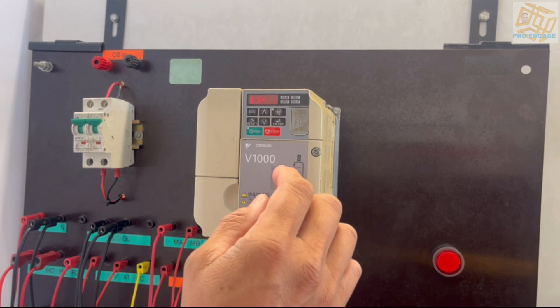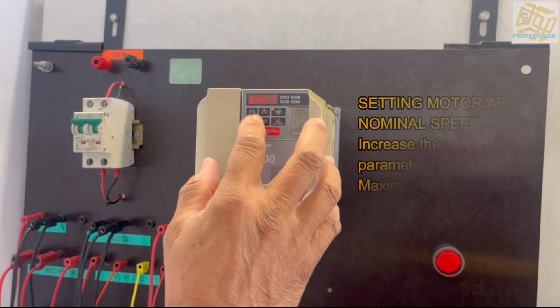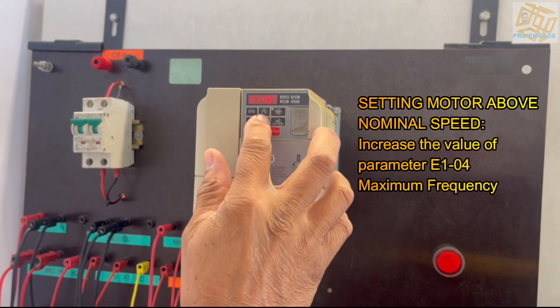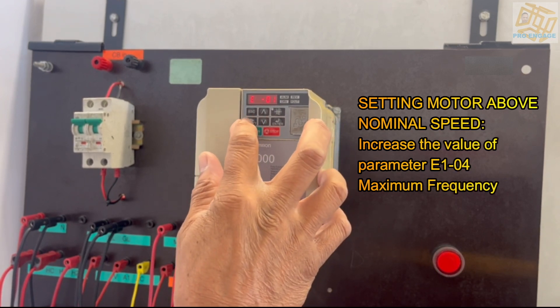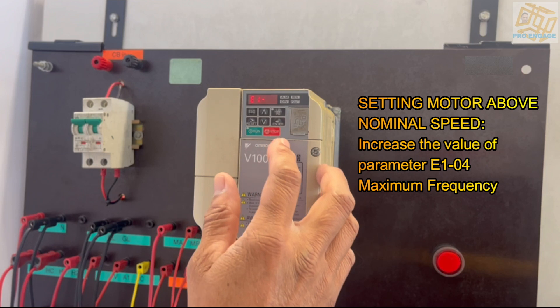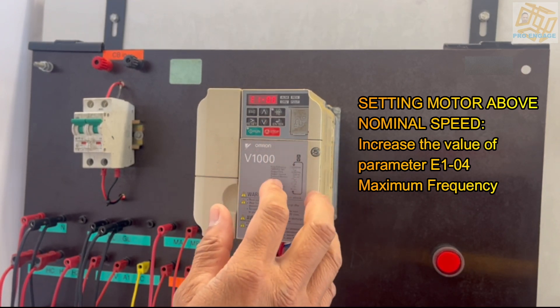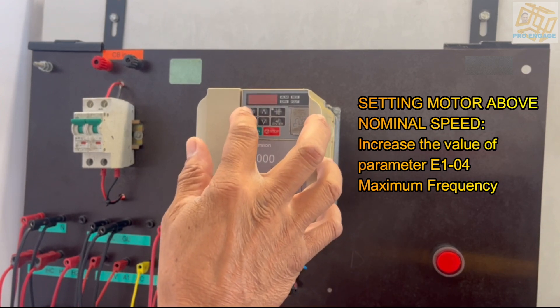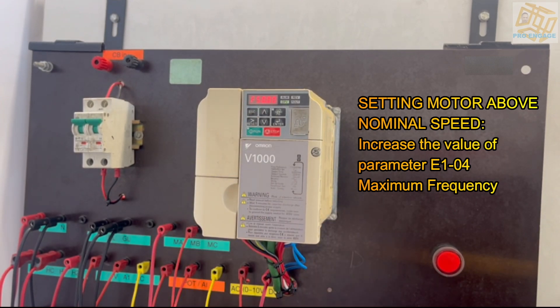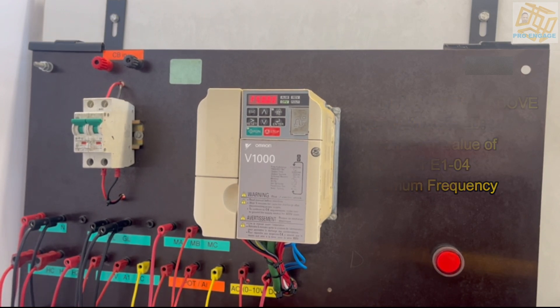There is the motor setting, motor above nominal speed. This would be one of the final settings. Increase the value of parameter E1-04 maximum frequency. If you set it to 40 hertz then the maximum will be 40 hertz. In this case it's 50 hertz, so this motor would run at maximum 50 hertz. We're changing the frequency so the motor will slow down or speed up. This has brought us to the end of setting the parameters.